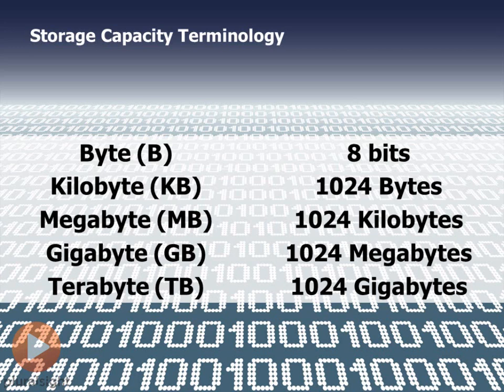Memory is in gigabytes, hard drive capacities are in gigabytes. Now, I know you might be saying, wait a minute — I have a hard drive that's a terabyte. Yes, we are in the early phases of moving from gigabytes being the norm to terabytes being the norm. A terabyte is 1,024 gigabytes.